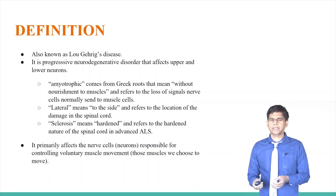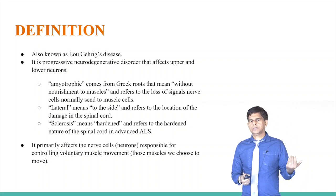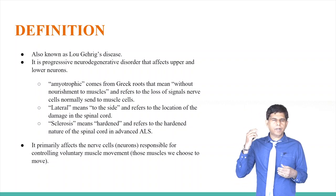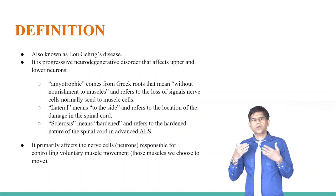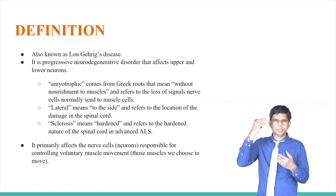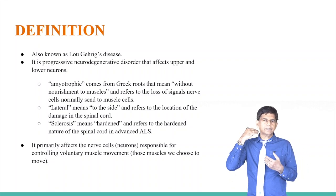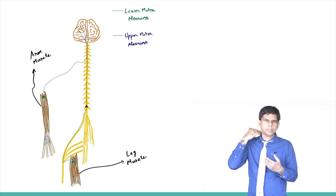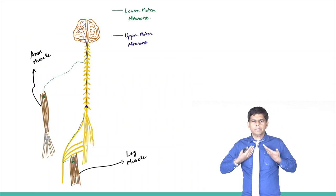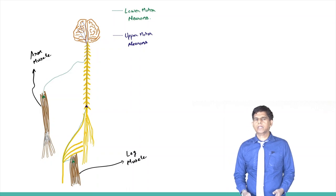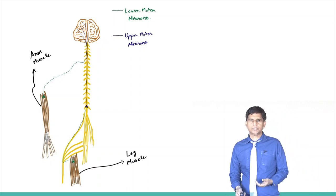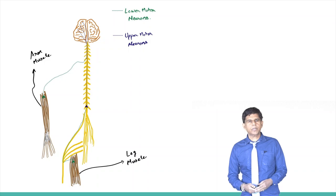There are some definitions you need to know. Upper motor neurons are involved from the brain until they exit through the spinal cord at the cervical level. Lower motor neurons are below that level and affect the muscles, especially the leg muscles.